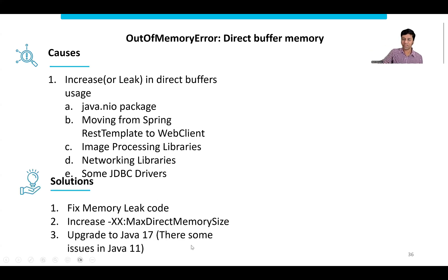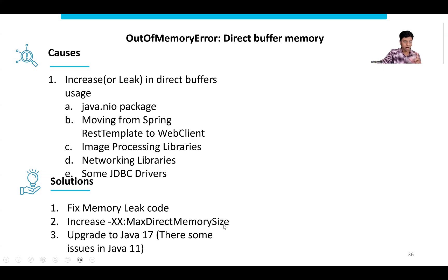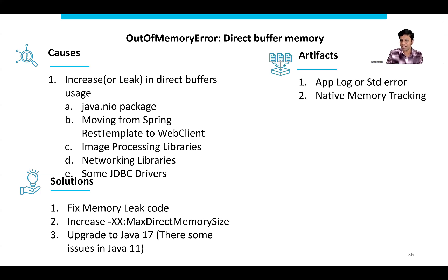Recap of direct buffer memory out of memory error: it happens when there's an increase in direct buffers usage, such as using the NIO package, moving from Spring's RestTemplate to WebClient, or using networking libraries or JDBC drivers that do direct NIO. Solutions: fix the code if it's a legitimate memory leak, or increase the max direct memory size (default is about 100 MB, increase to 200 or 300 MB). Also, Java 17 has made many improvements to the direct buffer region, so upgrading to Java 17 and above is another option. Artifact needed: application log or native memory tracking.